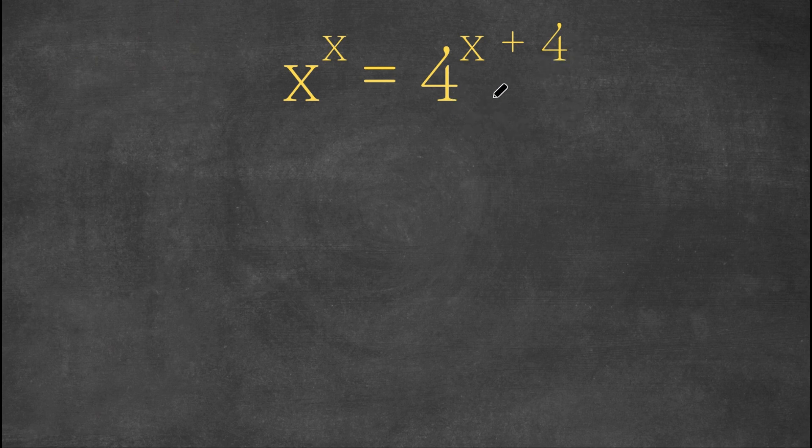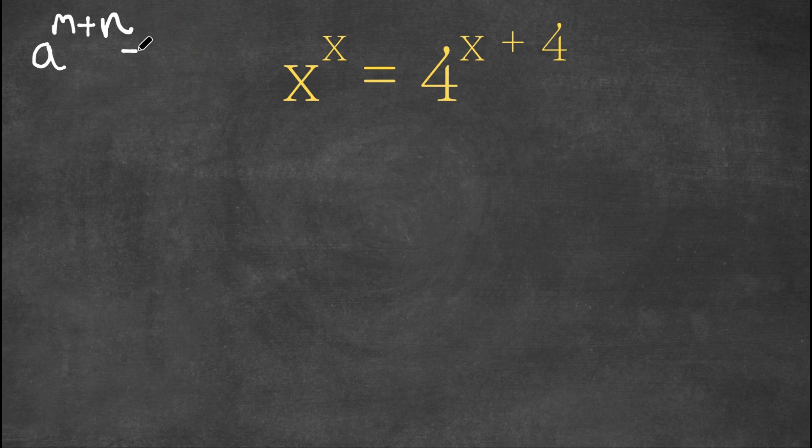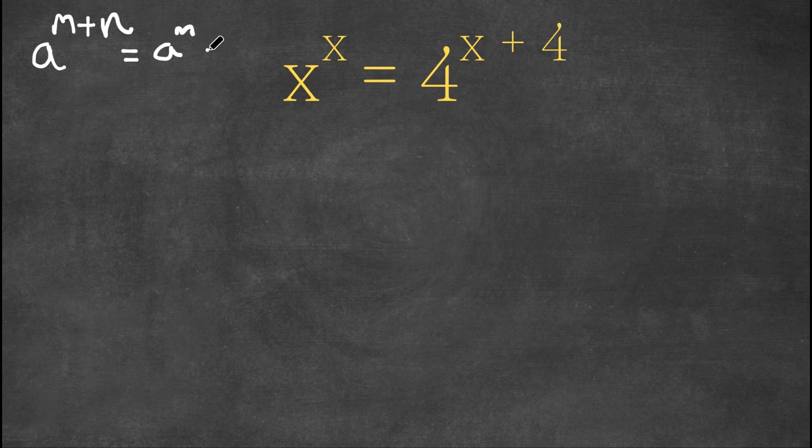So what I'm first going to do is I'm going to expand our right hand side here. An important property of exponents is that if we have a to the power of m plus n, this can also be written as a to the power of m times a to the power of n.